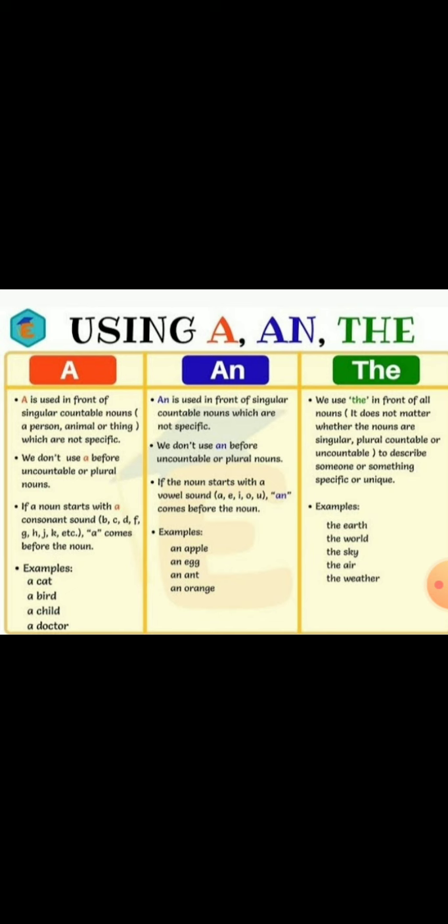Now, an. An is used in front of singular countable nouns which are not specific. We don't use an before uncountable or plural nouns. If the noun starts with a vowel sound like a, e, i, o, u, an comes before the noun.